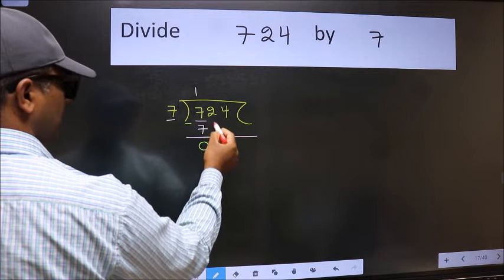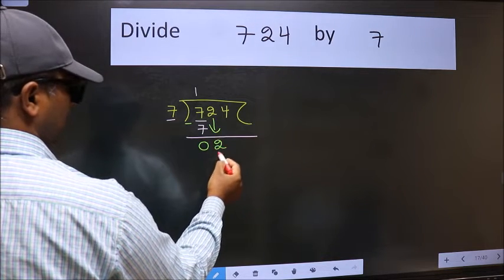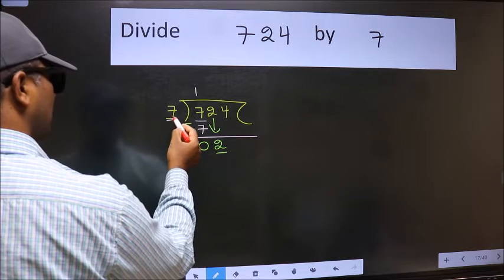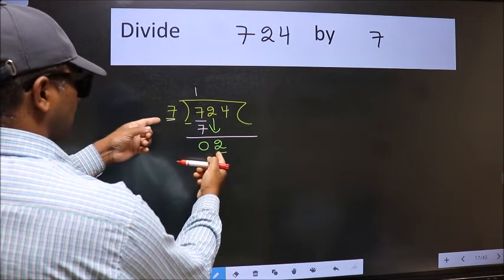After this, bring down the beside number. So 2 down. Now here we have 2 and here 7. 2 is smaller than 7.